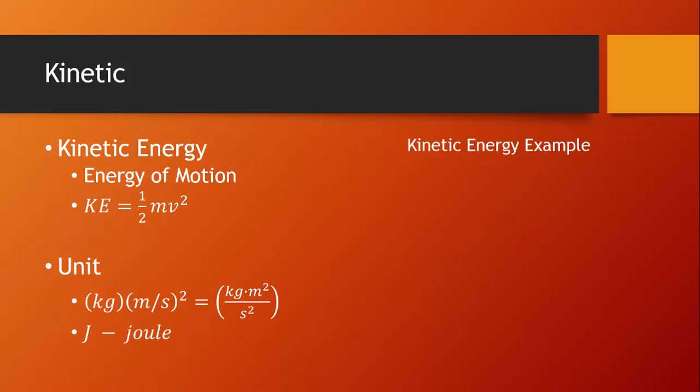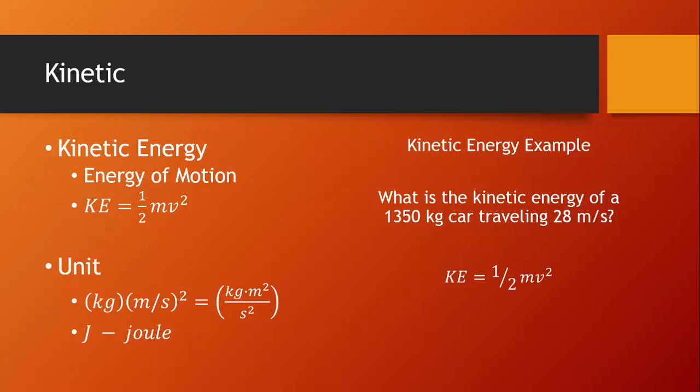Here's an example of a kinetic energy problem. What is the kinetic energy of a 1,350 kilogram car traveling 28 meters per second? As always, we'll start with the equation. We can substitute in our mass and velocity. And when we solve, remembering to square the 28 meters per second, we find that the car has a kinetic energy of 529,200 joules.